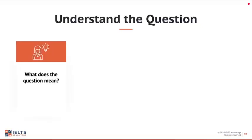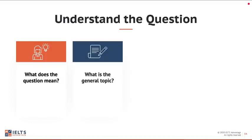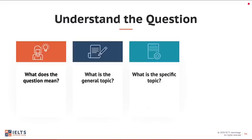The first thing to think about is: what does the question mean — what do the words and sentences mean? Then the second step: what is the general topic? A key mistake students make is looking quickly at the question and writing everything they know about the general topic. Avoid that by taking step three: what is the specific topic? You're going to write specifically about the specific question being asked, not generally about the general topic.